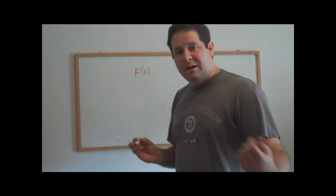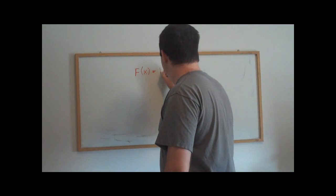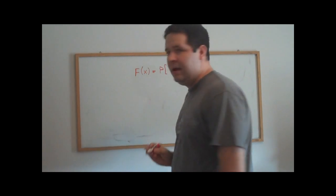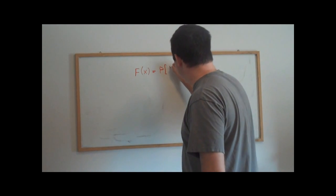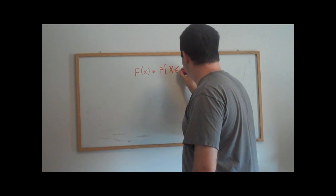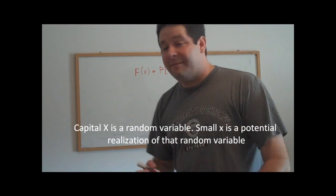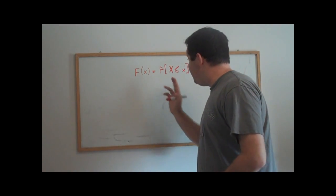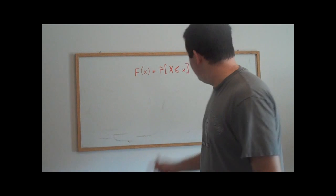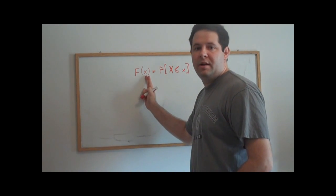A distribution function is a function of a real number that tells us how the probabilities of a random variable relate to that real number. In particular, the distribution function is defined to be the probability that the random variable x takes on a value less than this number here, x.